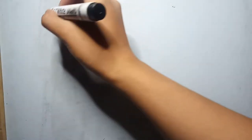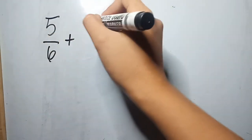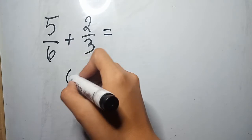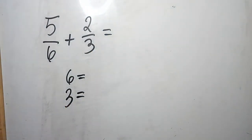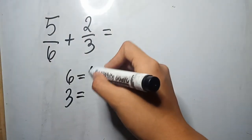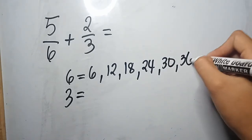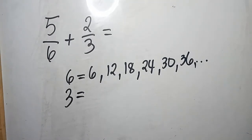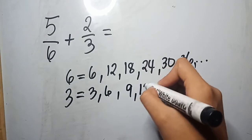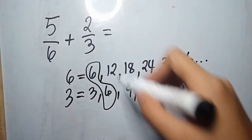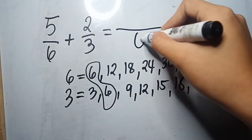Another example: 5 over 6 plus 2 thirds. As you can see, we have different denominators. So we will look for the LCD by listing the multiples of both 6 and 3. Multiples of 6 are: 6, 12, 18, 24, 30, 36, and so on. Multiples of 3 are: 3, 6, 9, 12, 15, 18, and so on. We have plenty of common multiples, but the least common is 6. Therefore, our LCD will be 6.